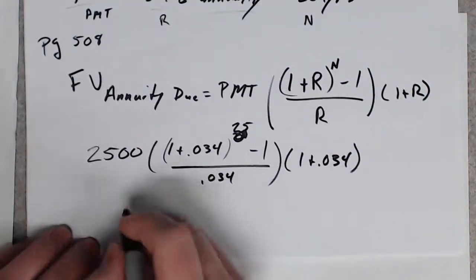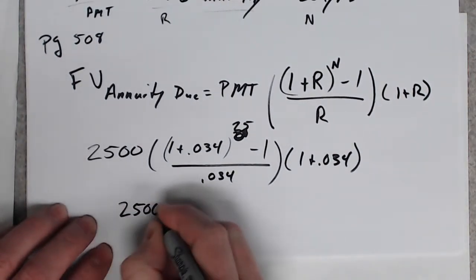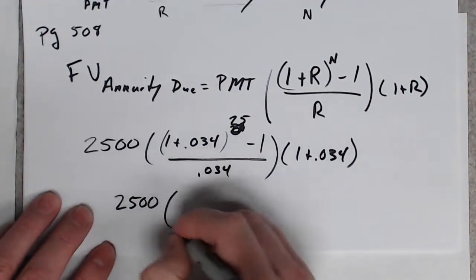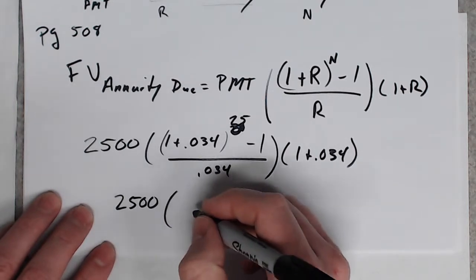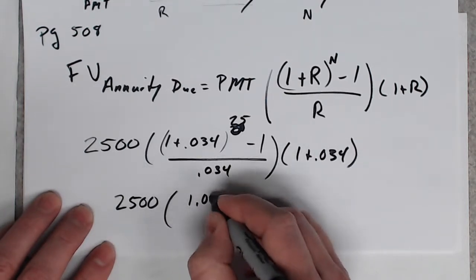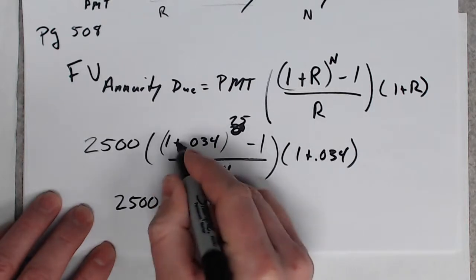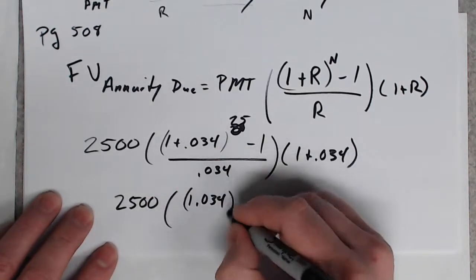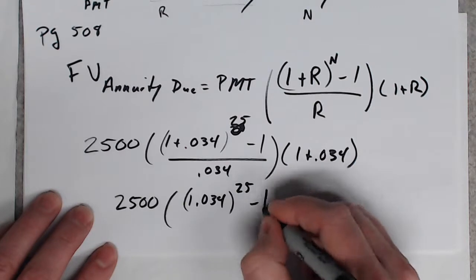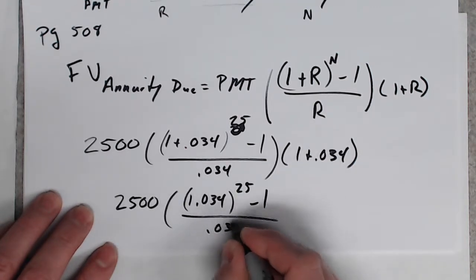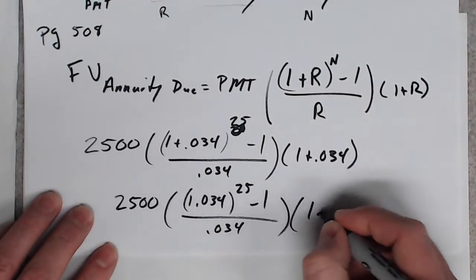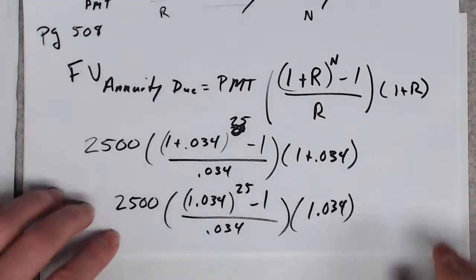I like to clean this up a little bit before I type it into the calculator. It's 2500 times 1.034. 1 plus anything is just 1.034. 25. Minus 1. All over .034. 1.034. That's all I can do.